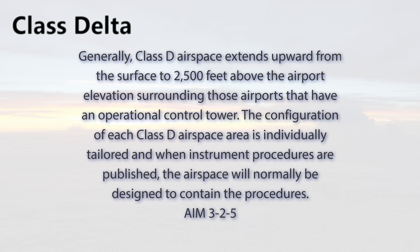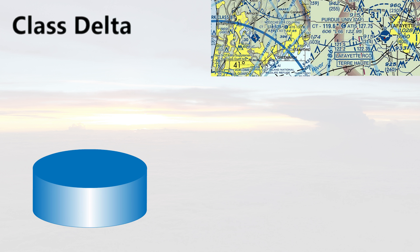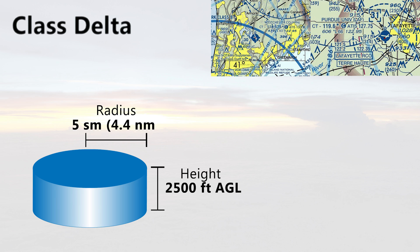The important thing to remember with Class D, just as any airspace, is that the shape of each one can be unique and is designed to suit the needs of the particular airport and airspace surrounding it. With that being said, Class D airspace has its own typical default design that is frequently found. The height of the airspace is usually 2,500 feet AGL, or above ground level. The radius will vary depending on the airport, but will often be 5 statute miles, which equals around 4.4 nautical miles when rounding up.